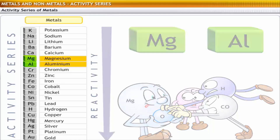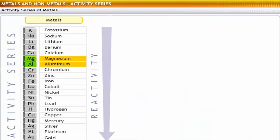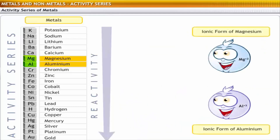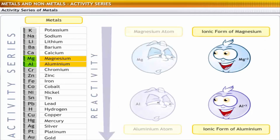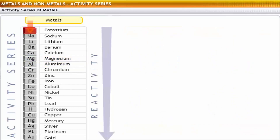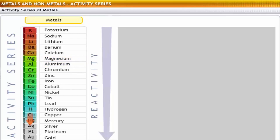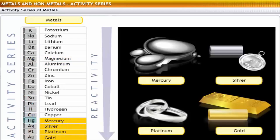This is because the ionic forms of magnesium and aluminium are more stable than their atoms. Moving further down, metals placed below copper do not rust easily because of their low reactivity.